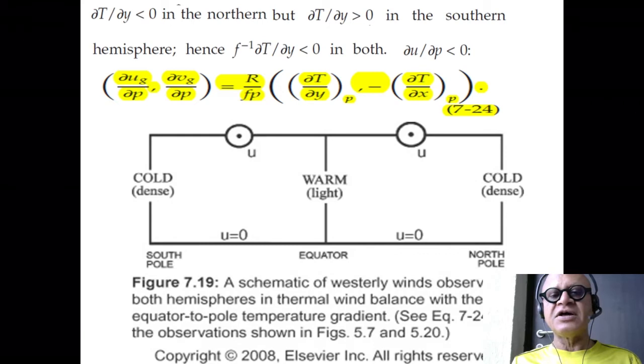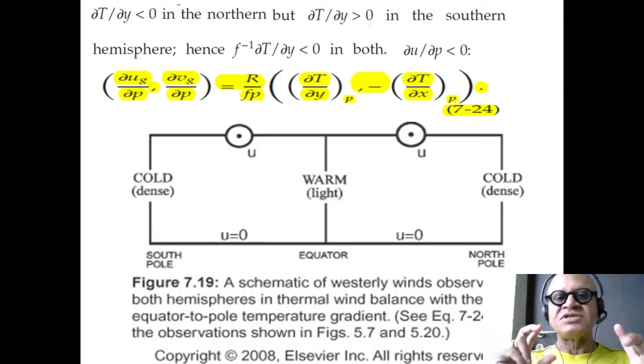But this allows us to look very easily at the schematic of the westerly winds. Here we are at the equator, warm light air, we have cold dense air. So you have the temperature surfaces dipping from the tropics to the higher latitudes. And we said that slope increases with altitude. So u has to increase, so dU/dP has to be negative. So you have to be able to adjust your z sense and your p sense. So p pressure is decreasing, so dU/dP less than zero means u has to increase.